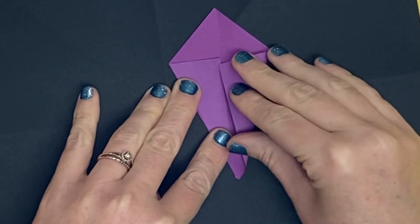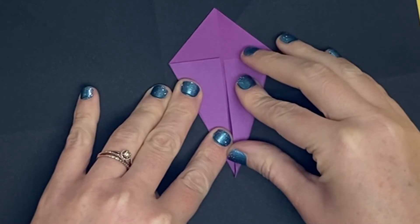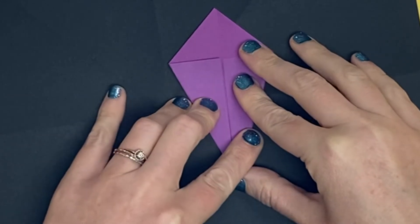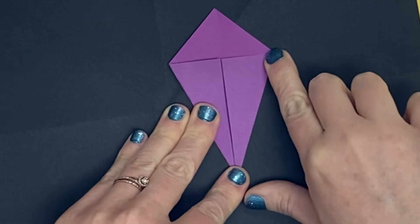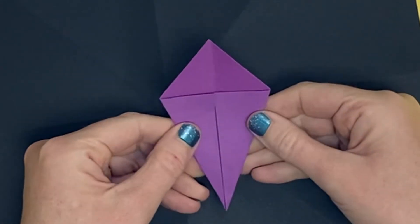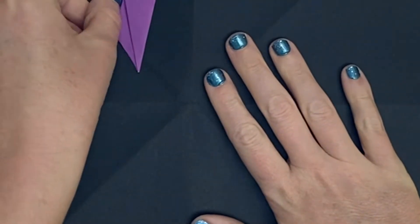Do the same on the other side. Take that bottom angle and move it so it matches the vertical line going through the center of the square and that is the kite fold.